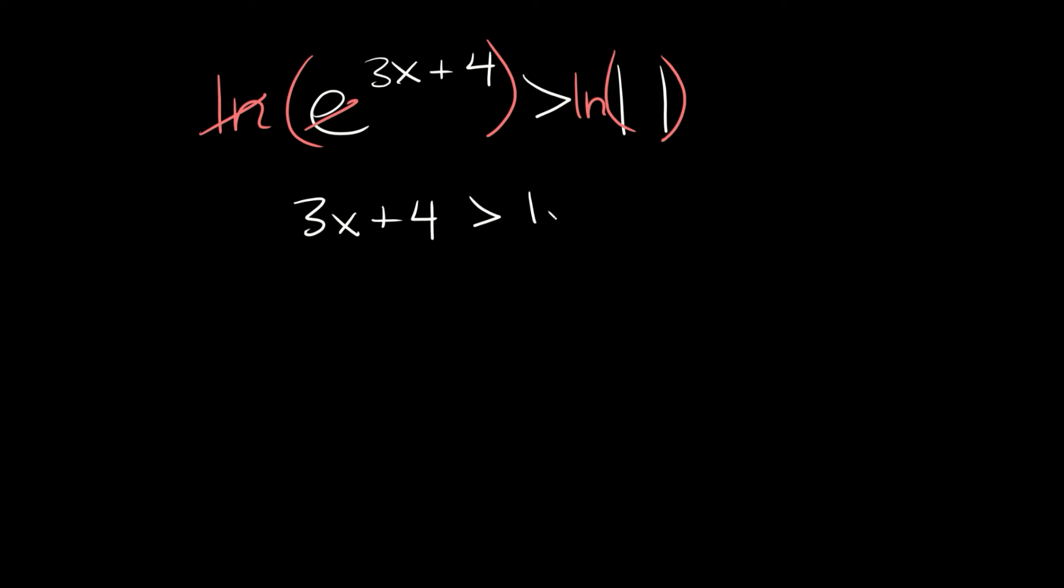Sorry, it's a little hard to see. The natural log of 11. We'll write it like that to make it a little bit more clear. So now here we can get rid of the 4 by subtracting 4 from both sides. These cancel out, so we're left with 3x is greater than the natural log of 11 minus 4.